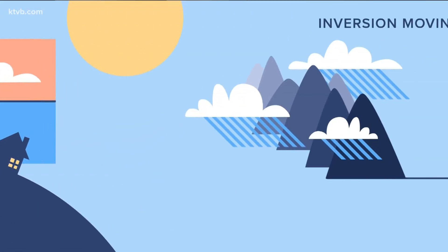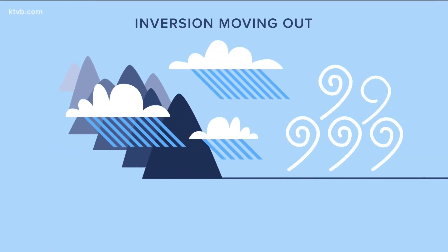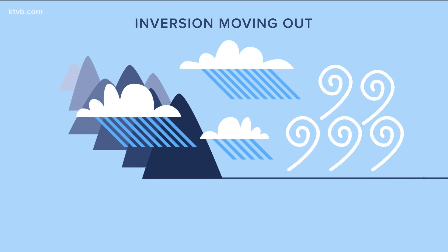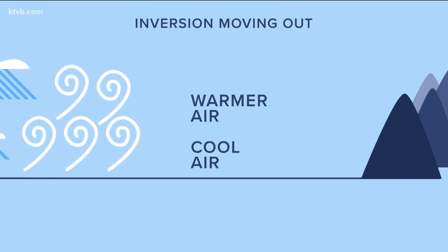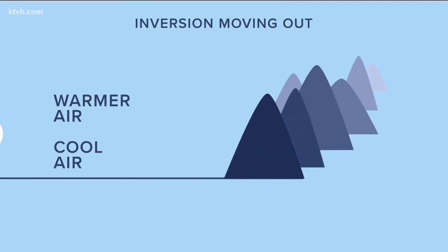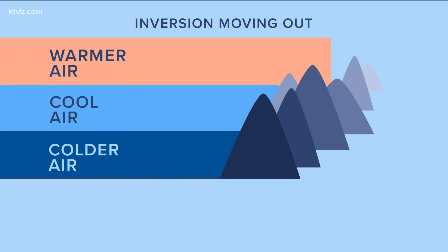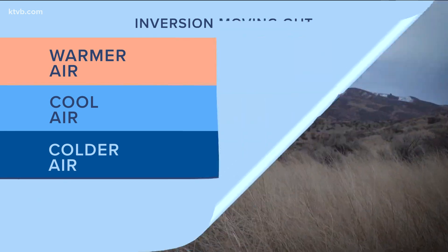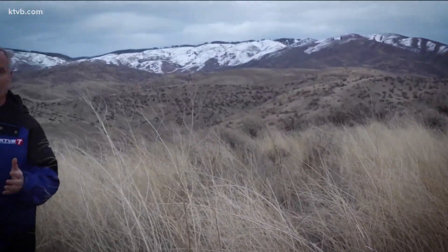There are a couple of ways an inversion can break down. A storm can bring wind down into the valley floors and stir up the air, or colder air can move in and force the air in the valleys to rise. And while inversions can lead to other events like heavy fog, low visibility, and pollution, it doesn't have to. In fact, in time, these can end quickly.